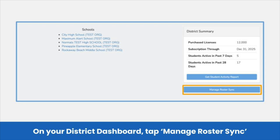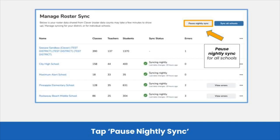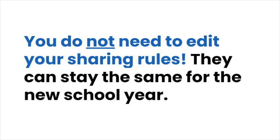Navigate to your Seesaw district dashboard and tap Manage Roster Sync. Tap Pause Nightly Sync to pause the sync between Clever or Classlink and Seesaw. That's it — your Sync is paused. It is important to note that you do not need to edit or touch your sharing rules. They can stay the same for the new school year.